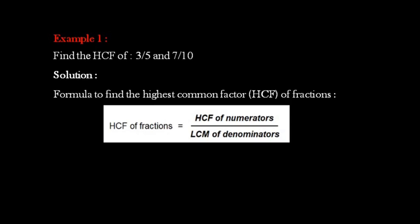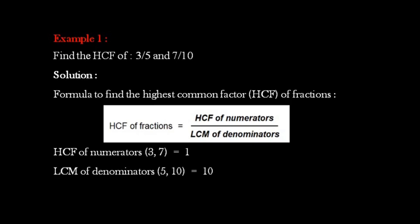The numerators given in the example are 3 and 7. The HCF of the numerators 3 and 7 is 1. Then we find the LCM of the denominators 5 and 10, which is 10.